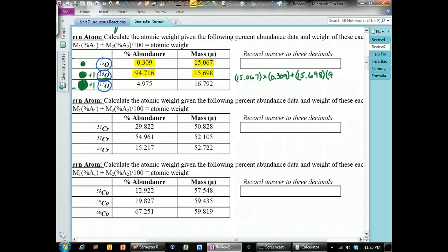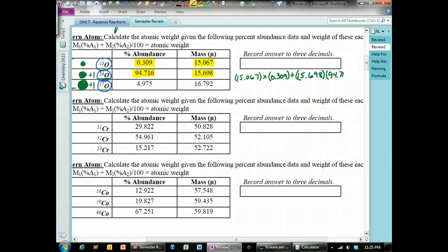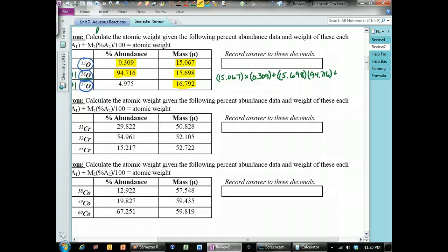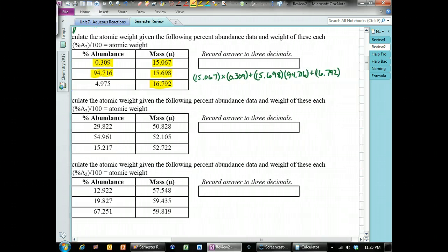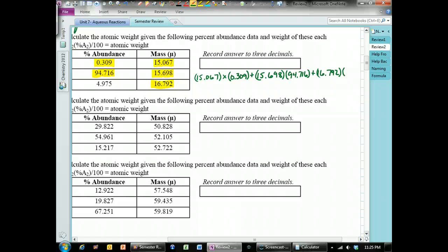meaning 94.716 of all the isotopes are oxygen 16 in this example. So, 94.716. And then we add up 16.792, which represents the mass of oxygen 17. 16.792.